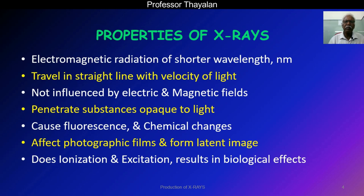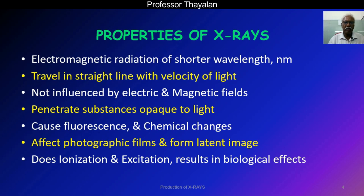Let us see some of the properties of X-rays. X-rays are electromagnetic radiation of shorter wavelength, in the order of nanometers. They travel in a straight line with the velocity of light — that means 3 lakh kilometers per second. X-rays are not influenced by electric or magnetic fields since they have no charge. X-rays penetrate through substances or matter that are opaque to light. X-rays can cause fluorescence and chemical changes. They affect photographic films and plates, forming a latent image. X-rays cause ionization and excitation in a medium, resulting in biological effects.